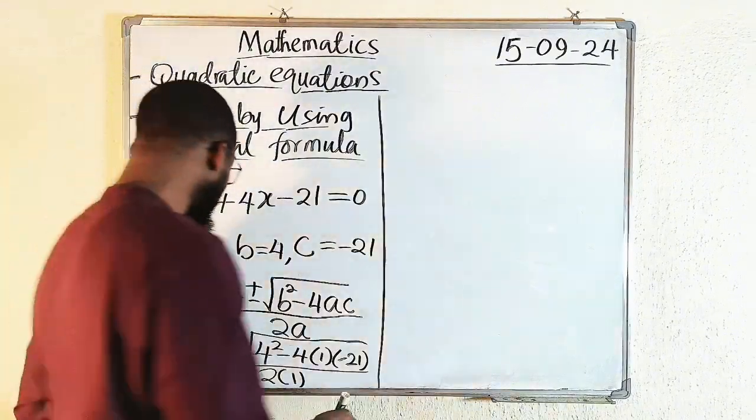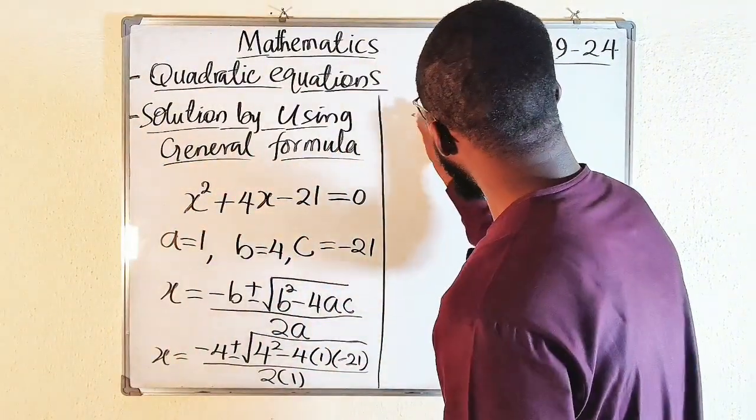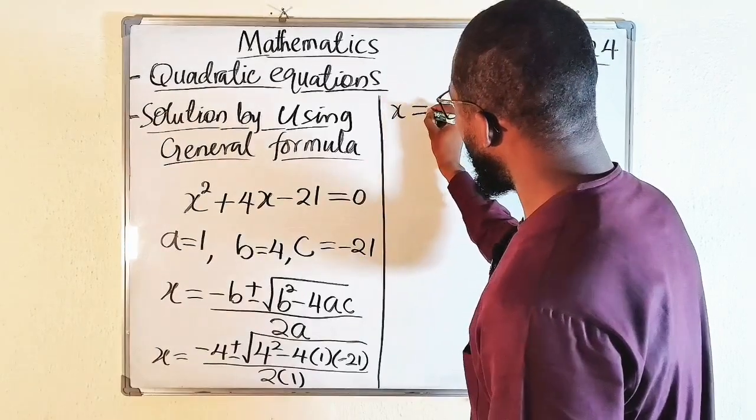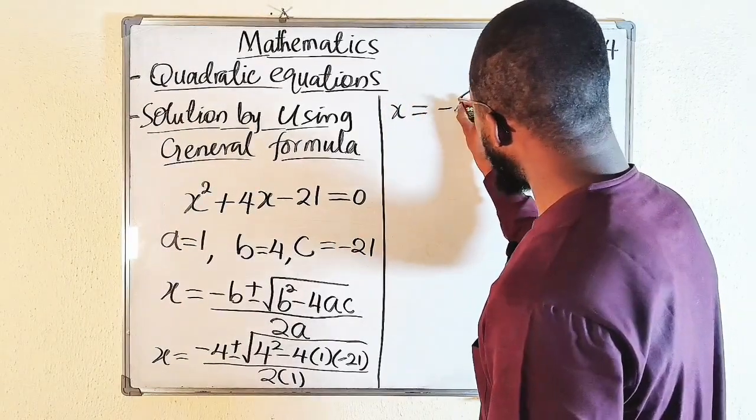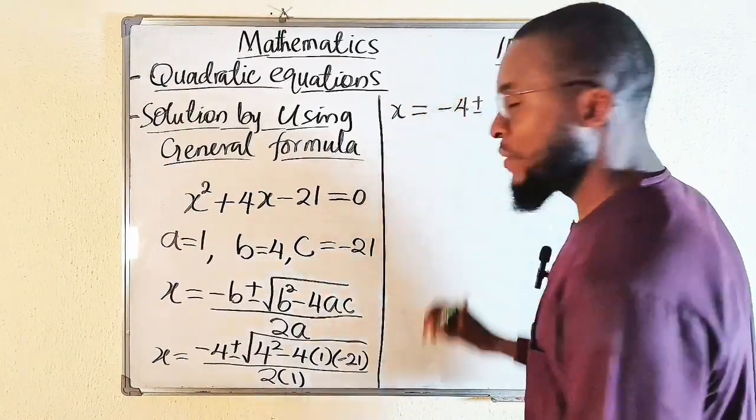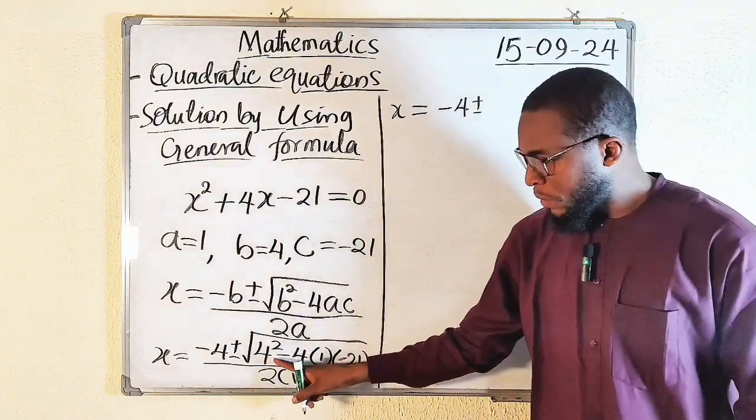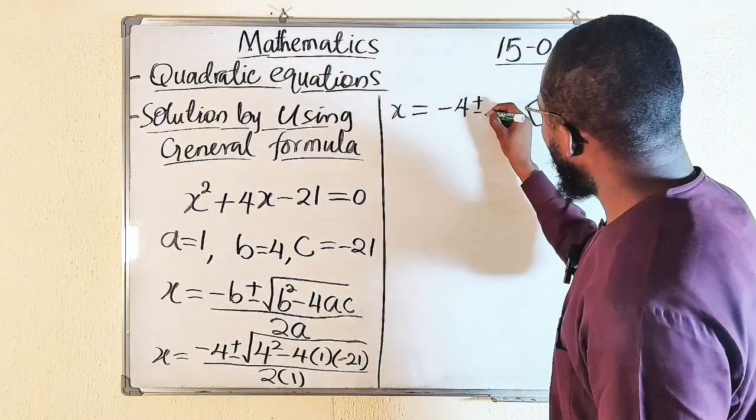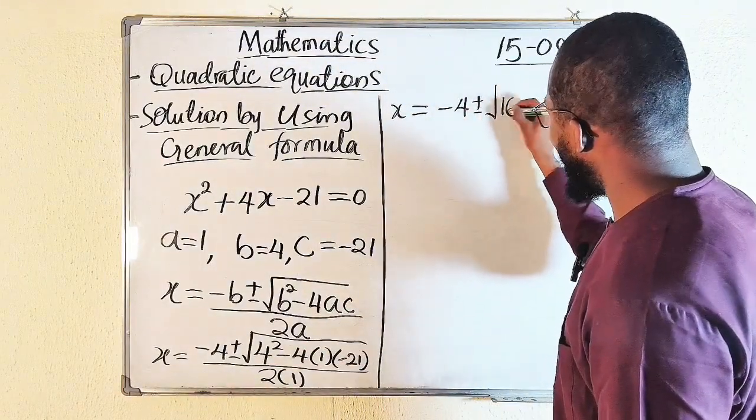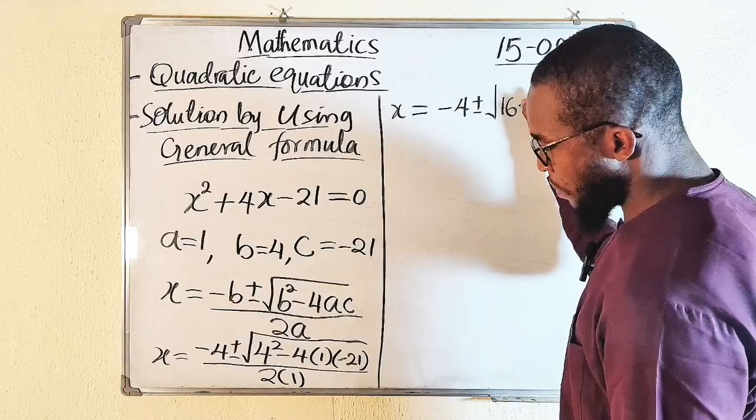So let's simplify this. x is equal to minus 4 plus or minus. 4 squared is 16, so we have square root of 16 minus.